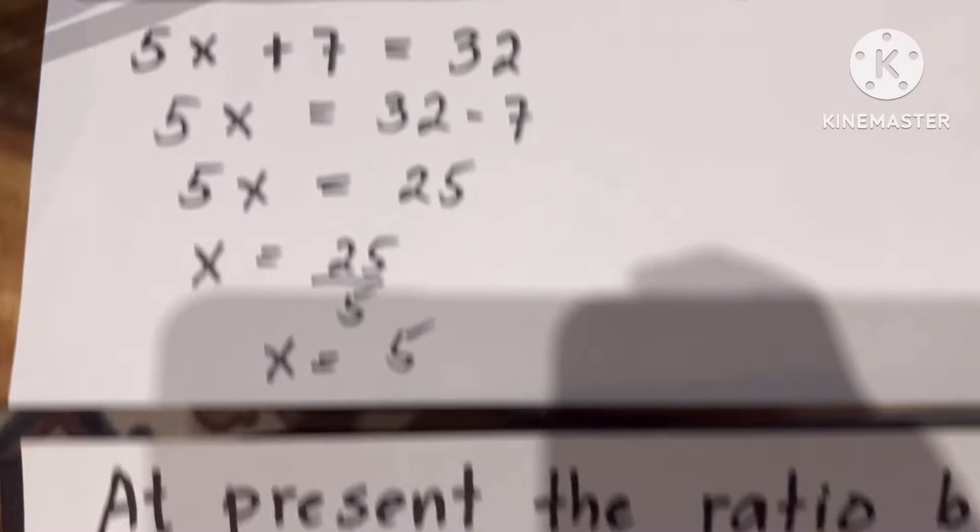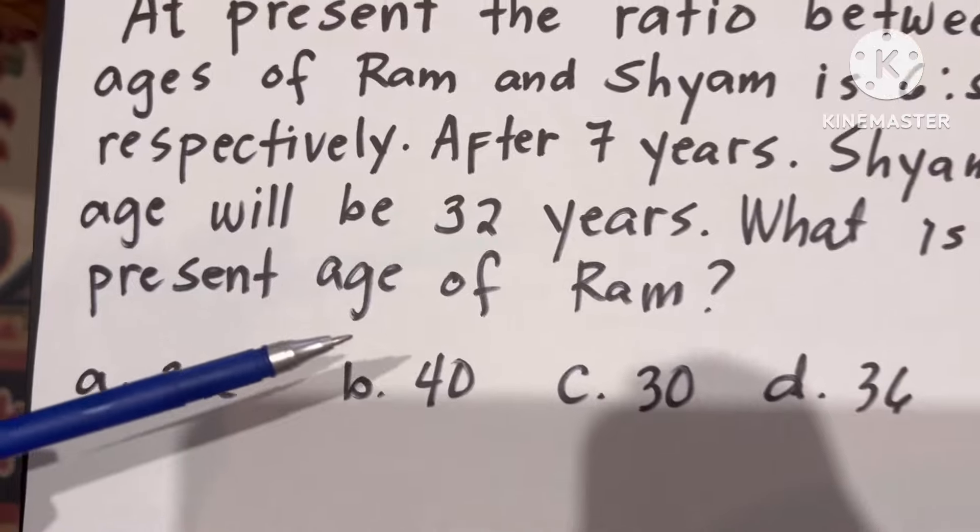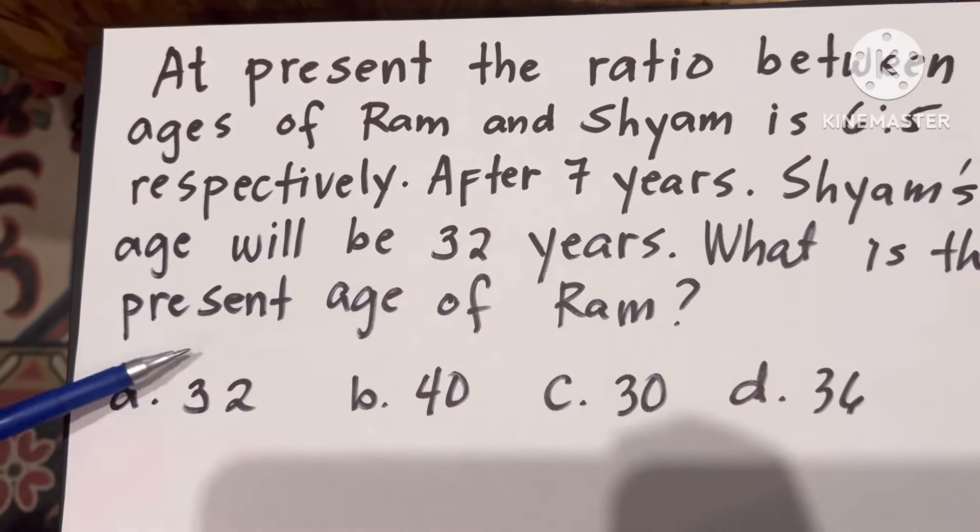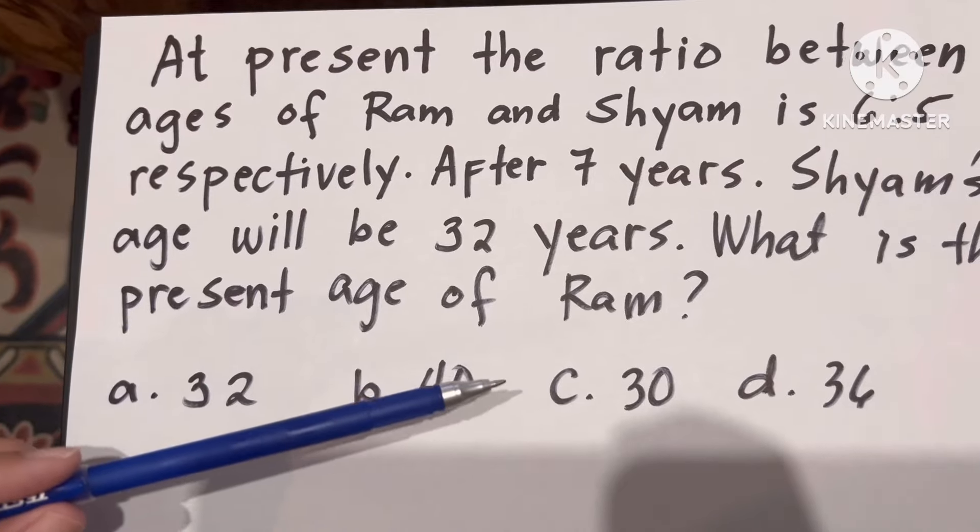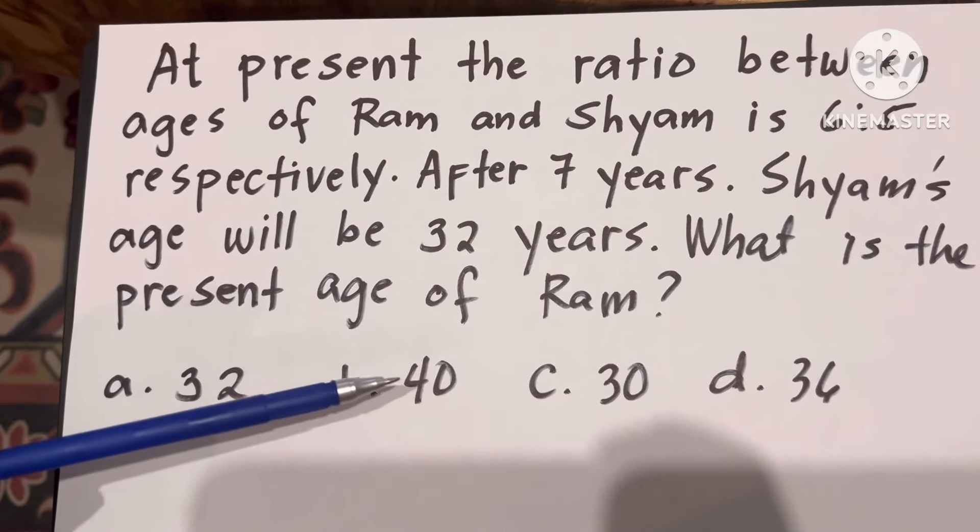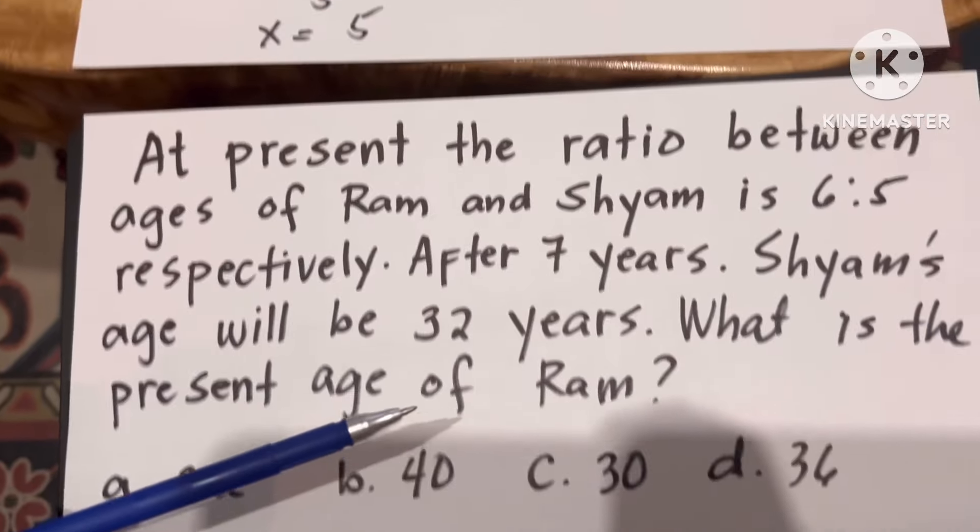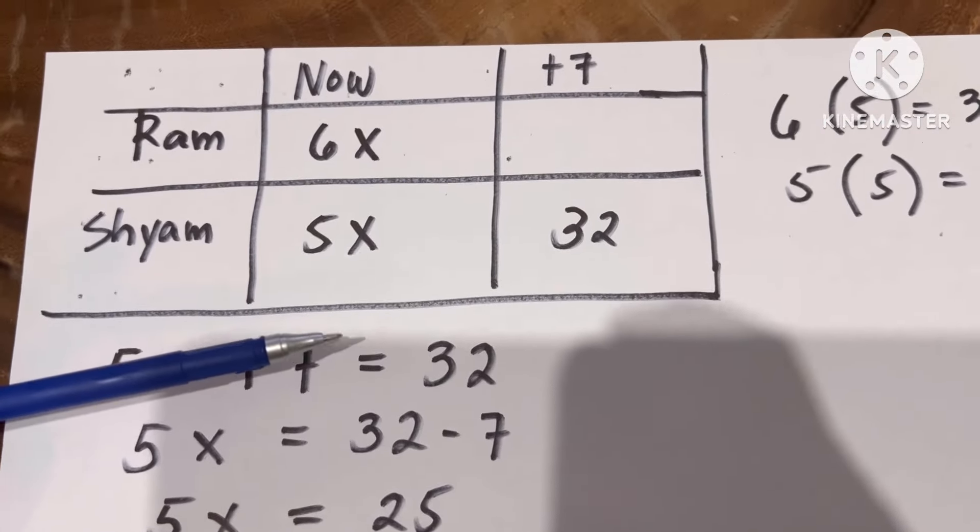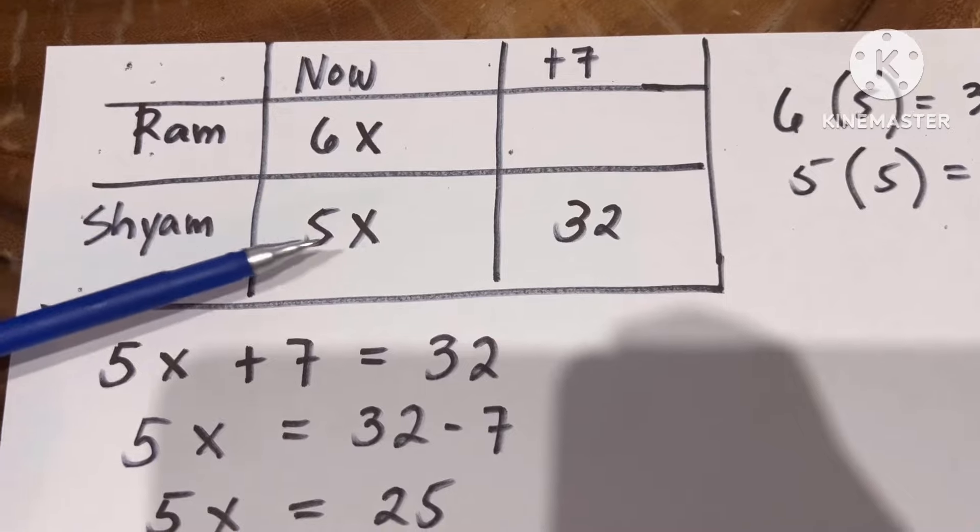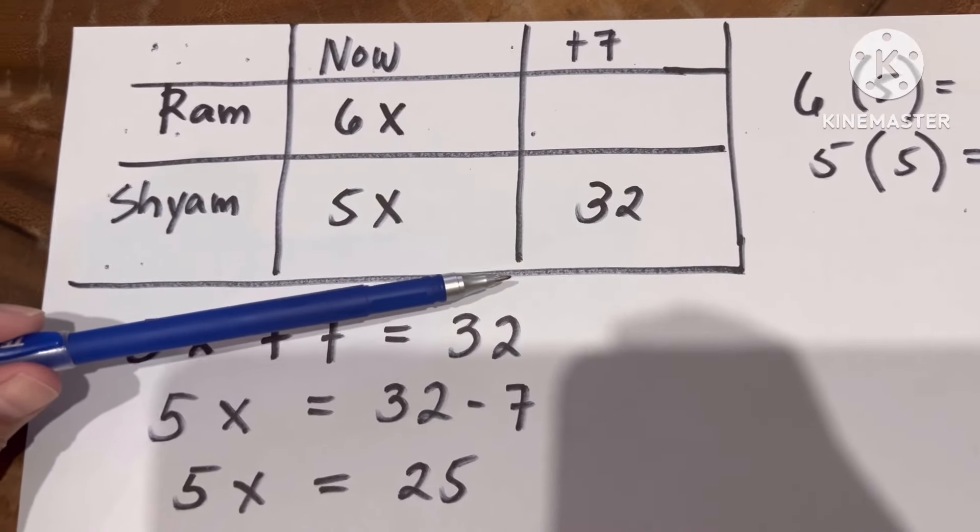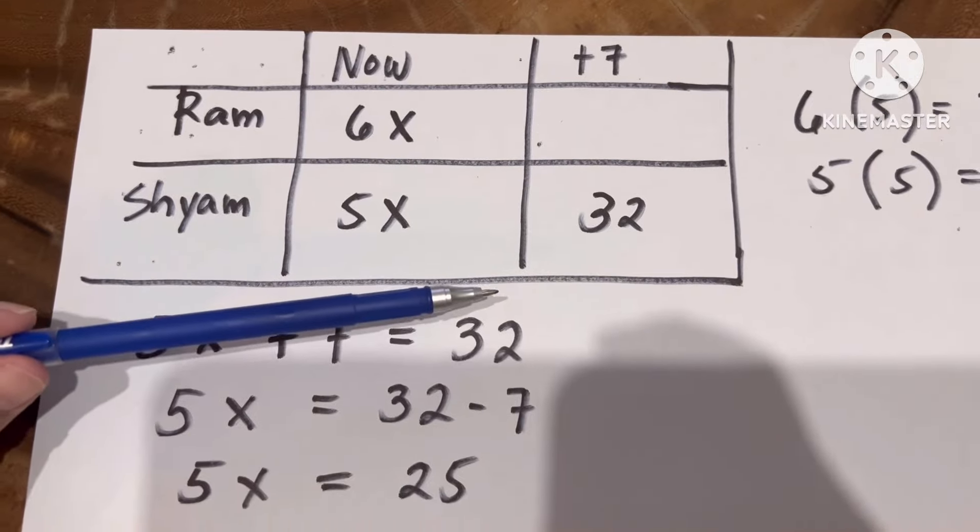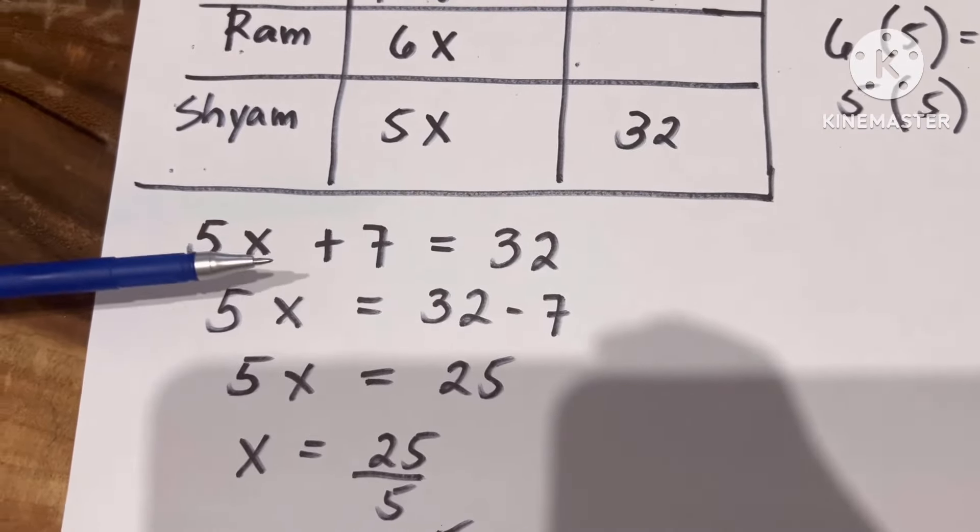It is also stated in the problem that after 7 years, Shyam's age will be 32 years. So going back to our equation, Shyam will become 32 years old after 7 years. From there, we're going to form our equation.